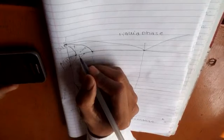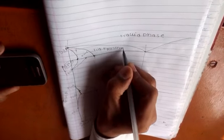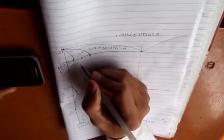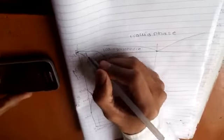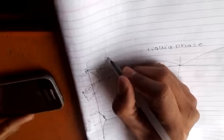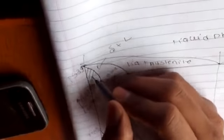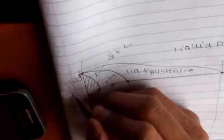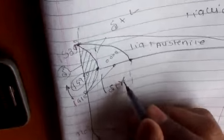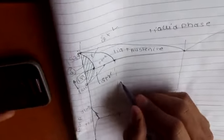...liquid plus austenite. This is delta plus liquid. This region is delta with BCC structure. This is delta plus gamma. This whole region is austenite...